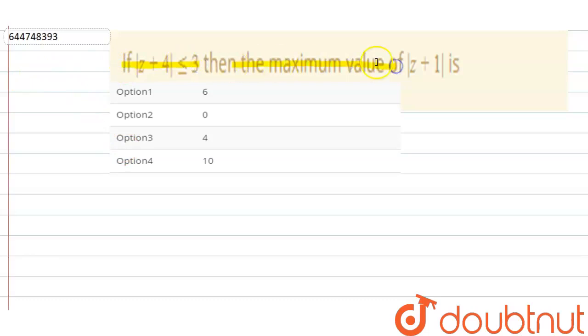Then the maximum value of mod z plus one is. Now if I write this mod z plus one as this is what z plus four minus one minus three, okay.